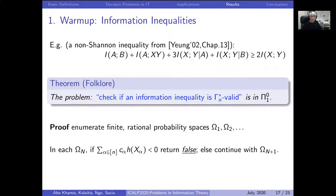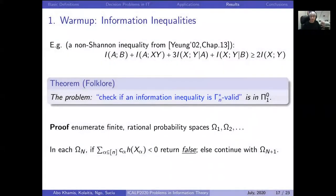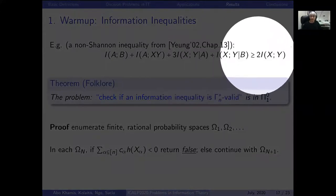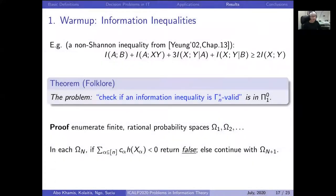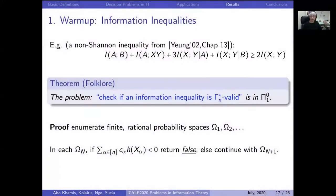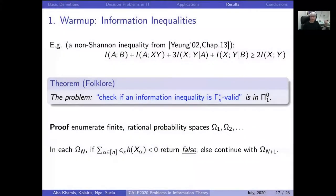The proof enumerates over all finite probability spaces with rational coefficients; if any invalidates the inequality we return false, otherwise we continue to infinity. The key observation is: if there exists a finite probability space — even with irrational probabilities — on which the inequality fails, there exists an entire neighborhood of those irrational probability values where any choice of probabilities still refutes the inequality. Hence we can also find a probability space with rational probabilities, which is what we enumerate.